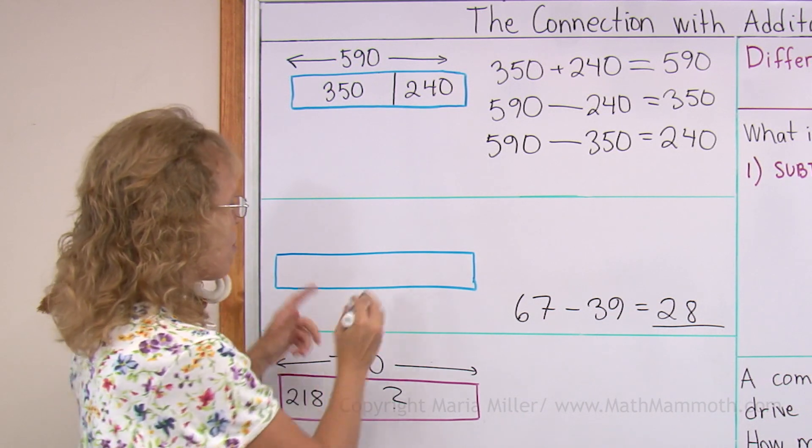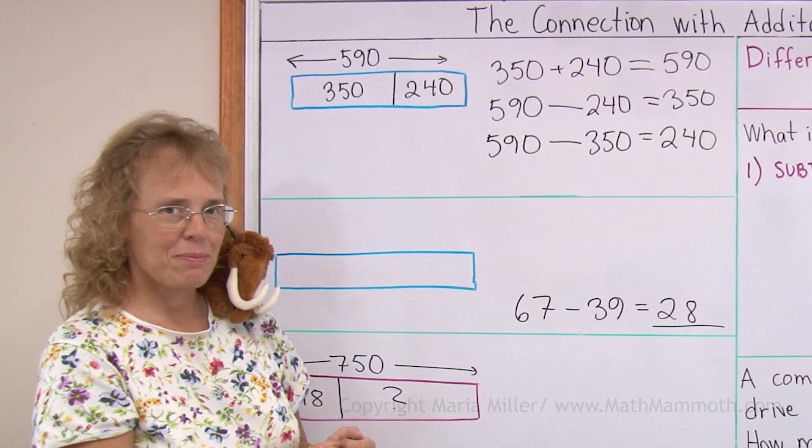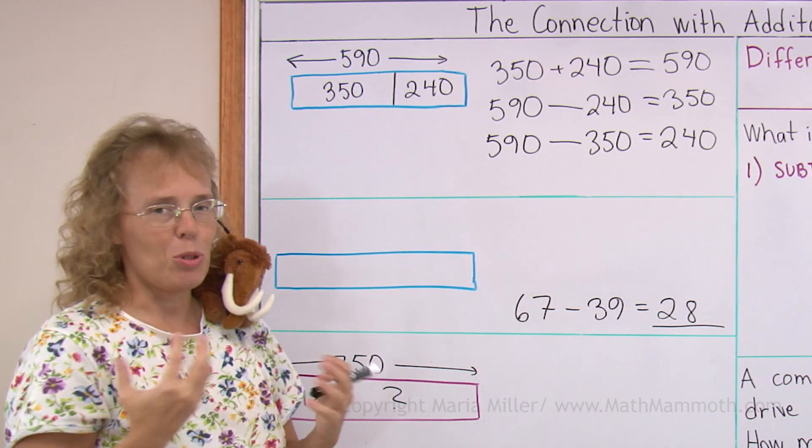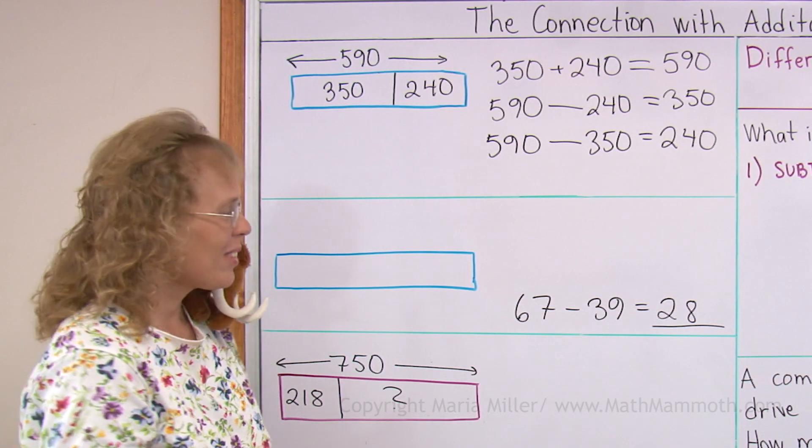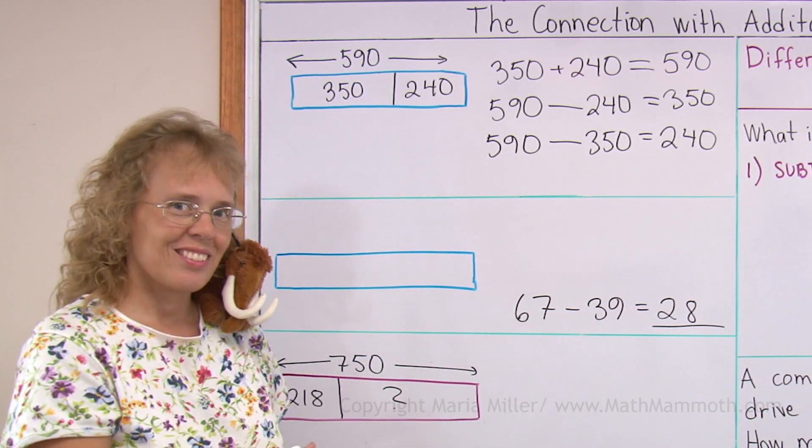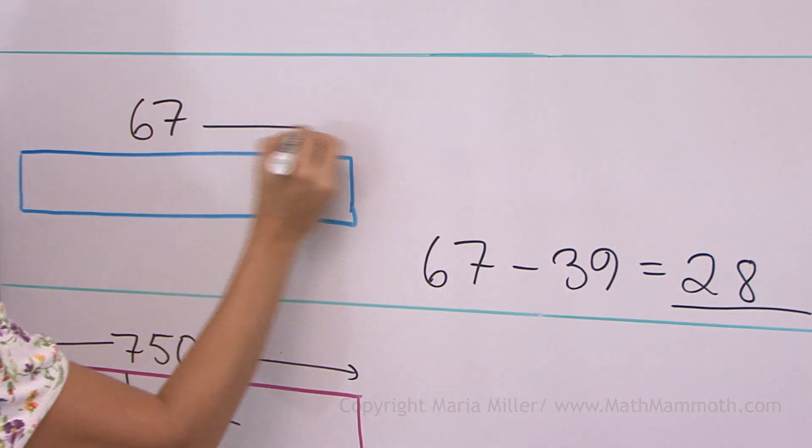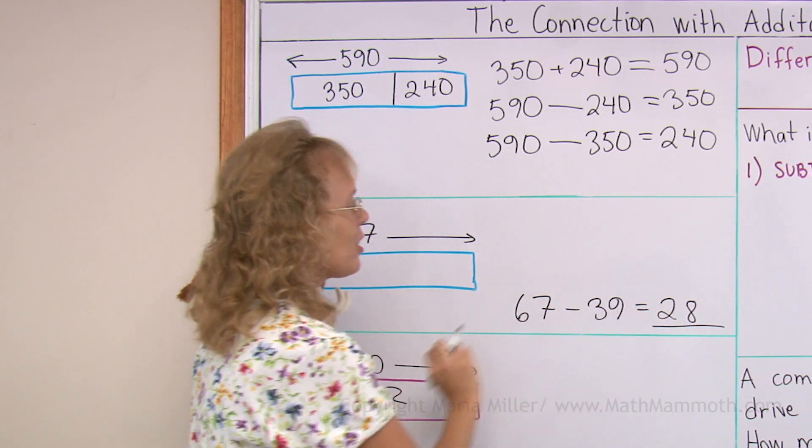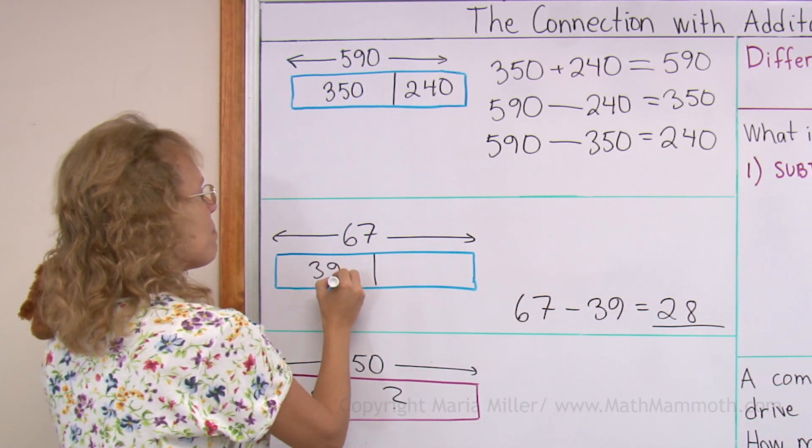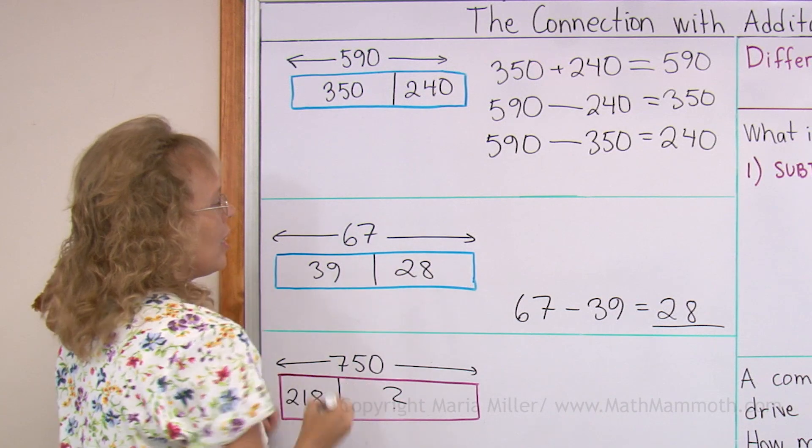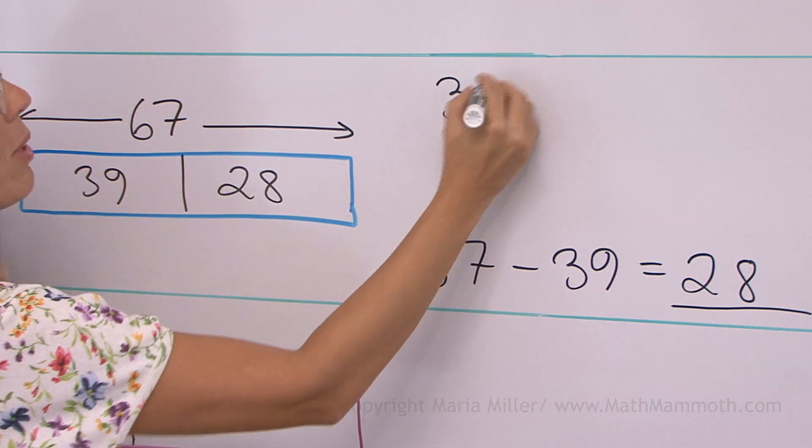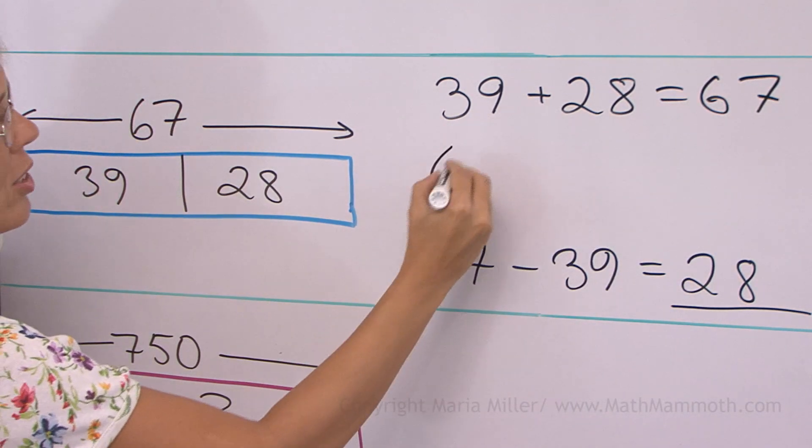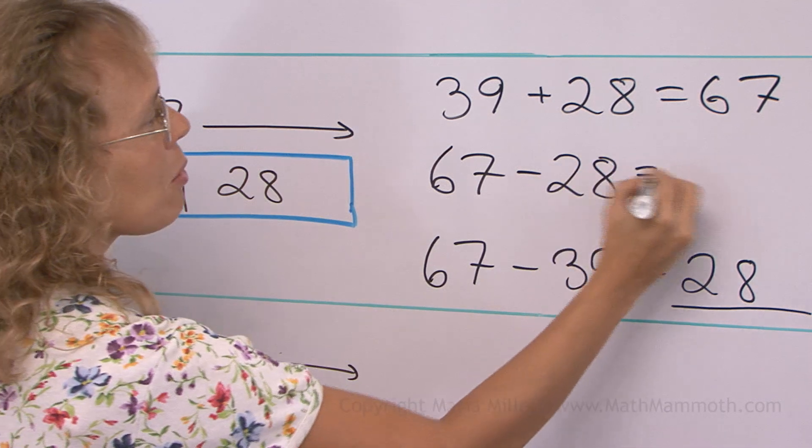Now maybe we can figure out where the numbers would go in this bar model. What would be the total length of my board, so to speak, or this bar model? Wouldn't it be the biggest number I have? 67. That's how I mark the total length. And then of course the two parts would be these two numbers: 39 and 28. Now I will also write the addition over here: 39 plus 28 equals 67, and the other subtraction: 67 minus 28 equals 39.